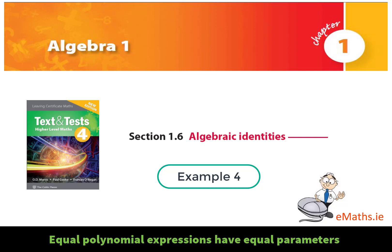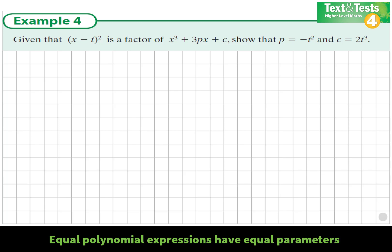Algebraic identity, example 4. Equal polynomial expressions have equal parameters. Given that (x - t)² is a factor of the cubic x³ + 3px + c, we need to show particular things.